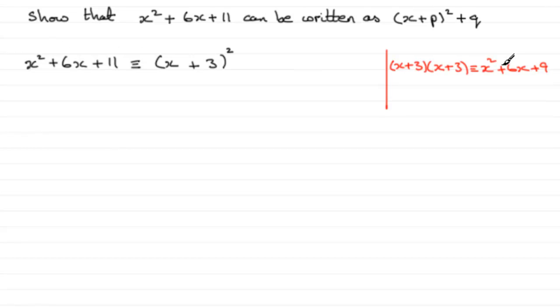There you go, x² + 6x. But we've got this extra 9. So what we do is we subtract 9, and this now is going to just come to x² + 6x. And then we add the 11.